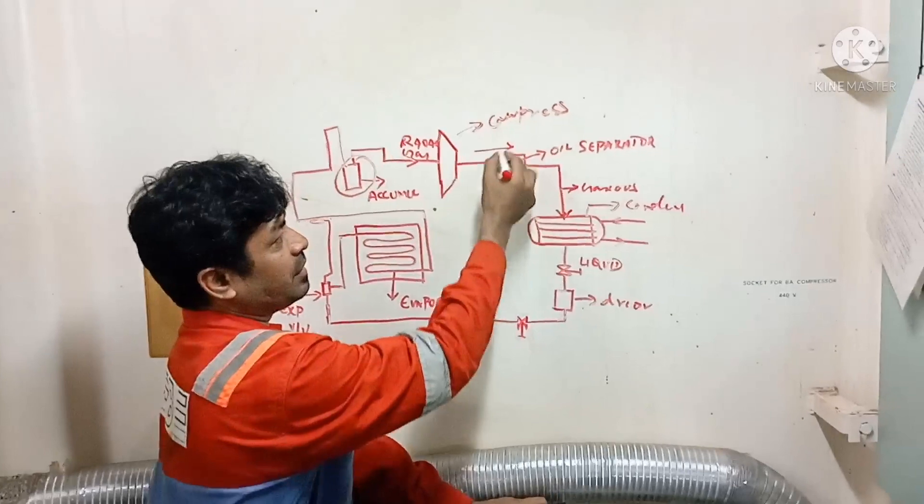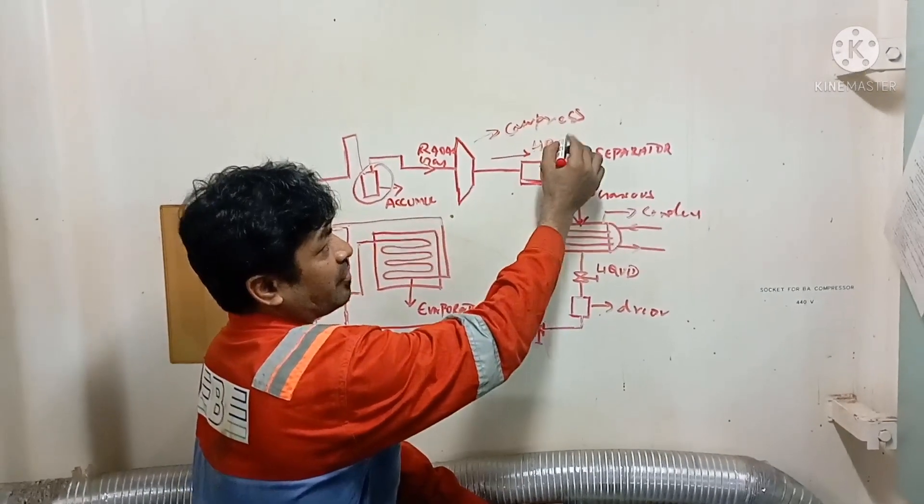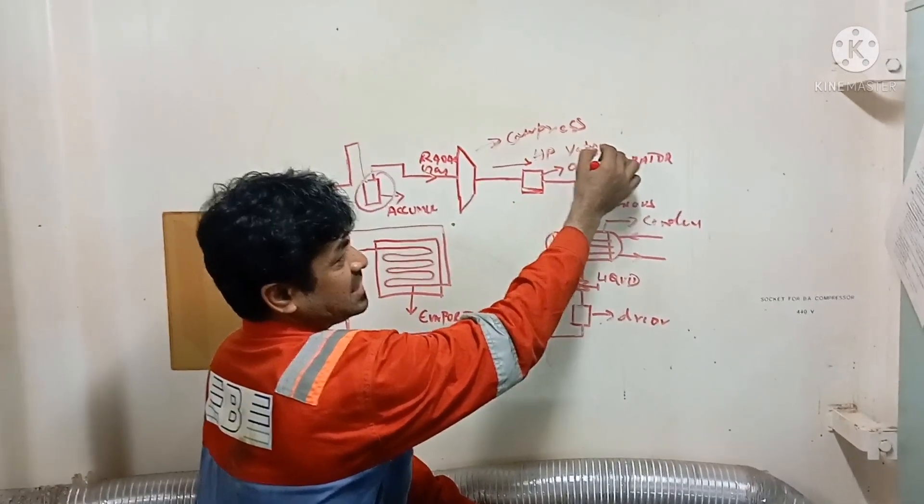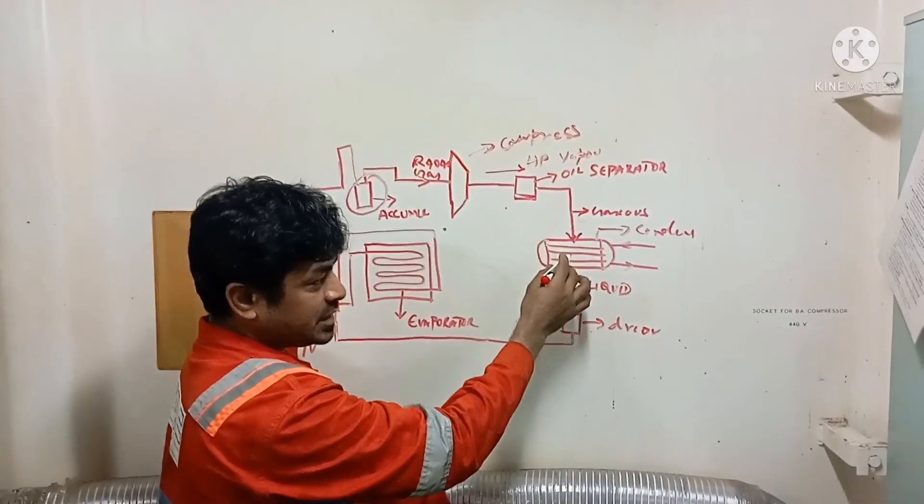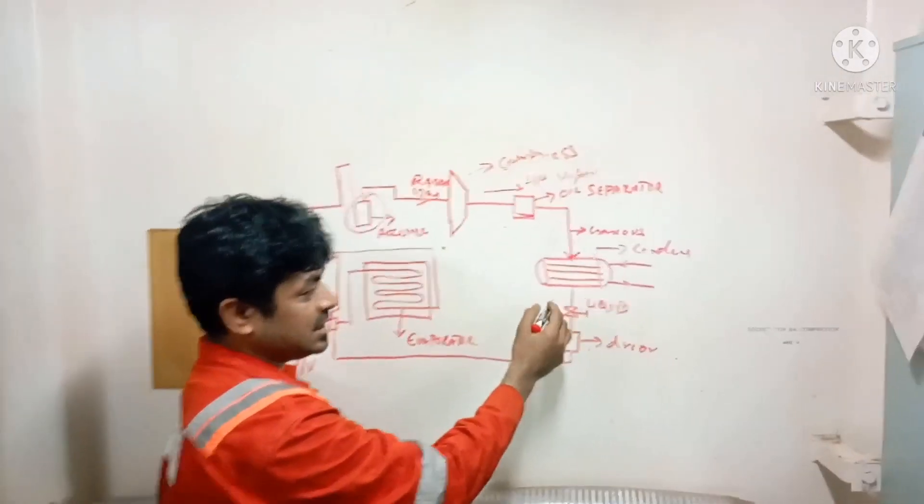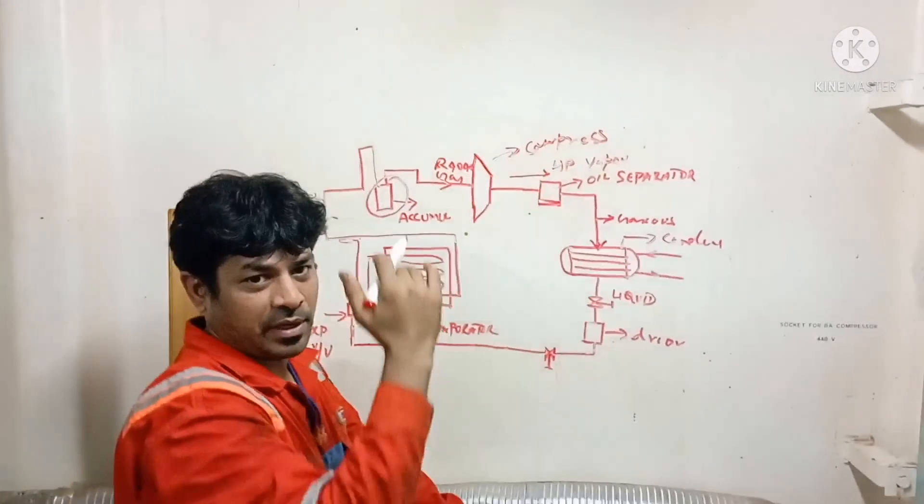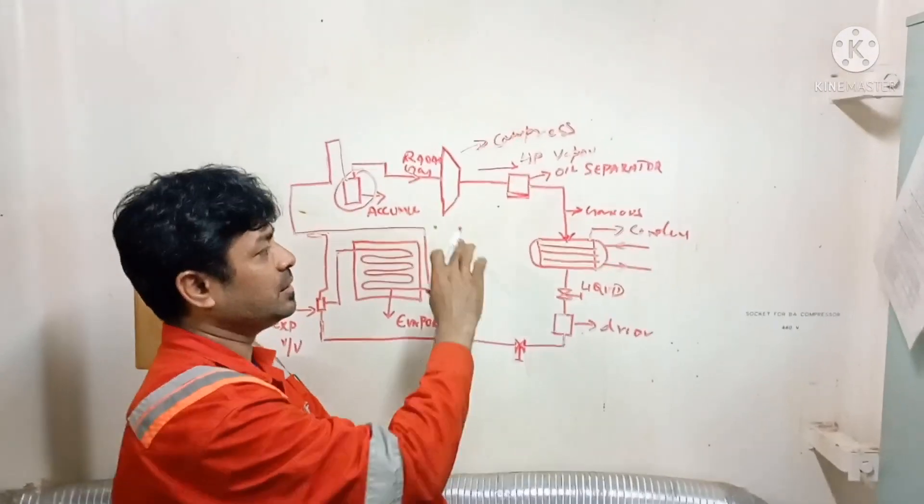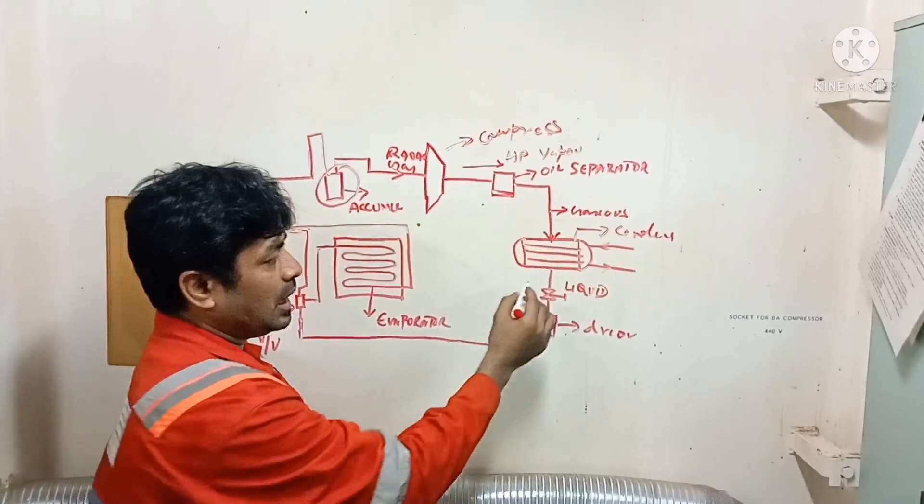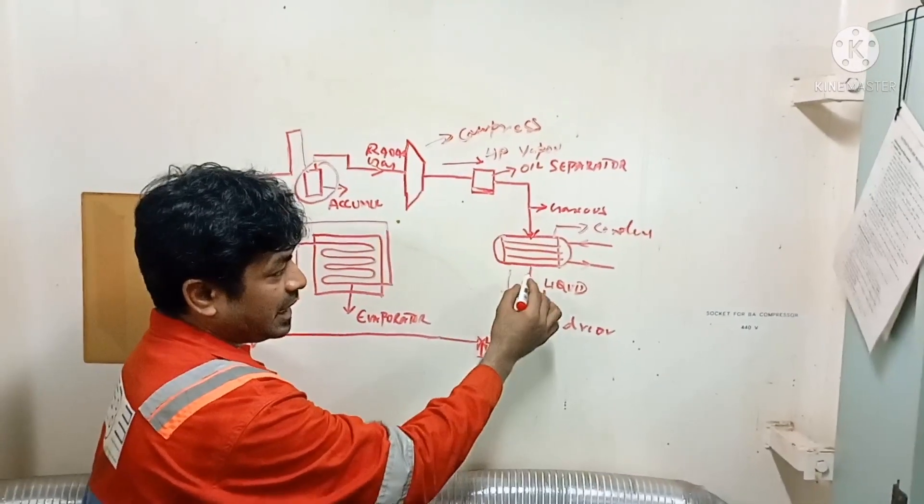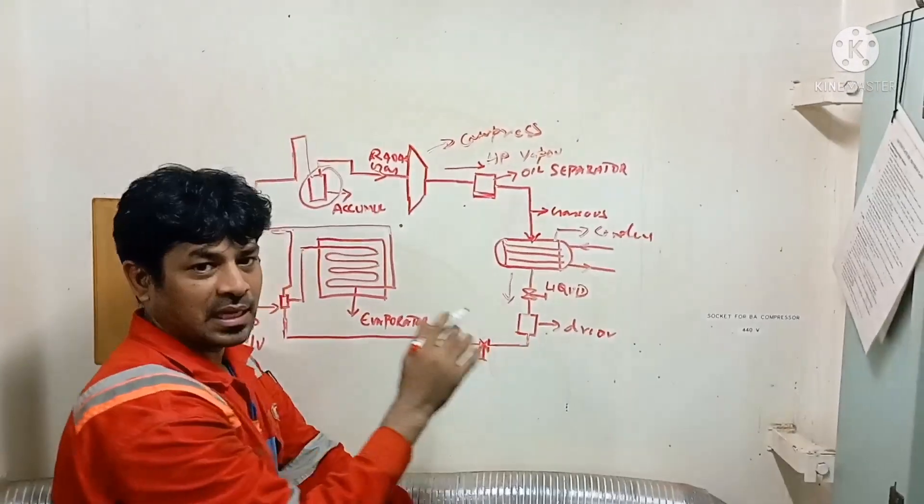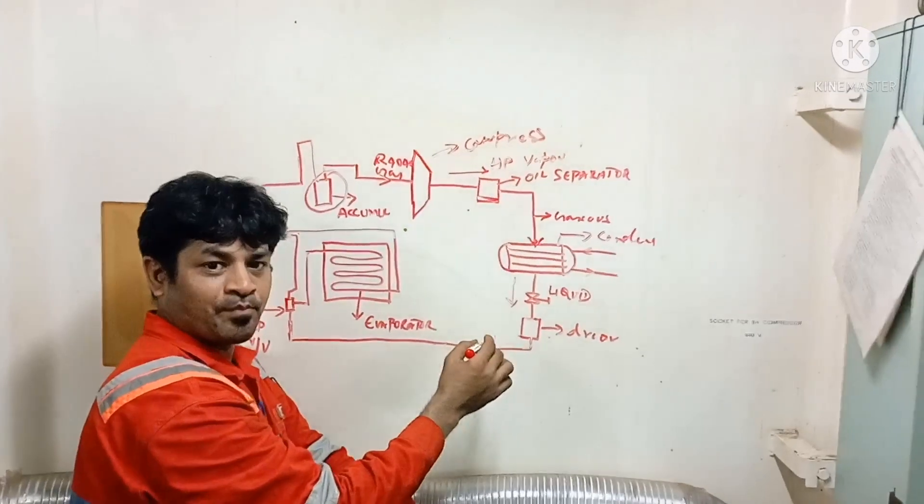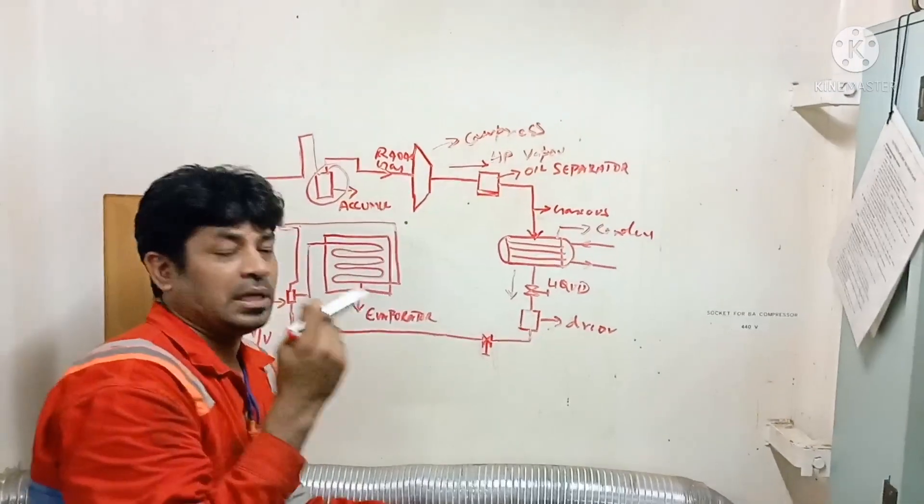From here, compressor outlet will be high pressure vapor in a gas stage. After crossing the condenser, the pressure will drop. It doesn't drop so much, but the pressure will go down. From here, it will flow with limited pressure in a liquid stage.